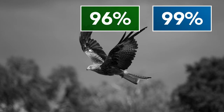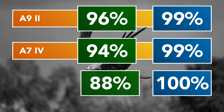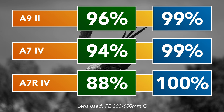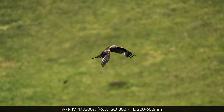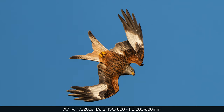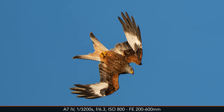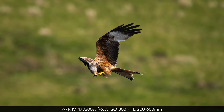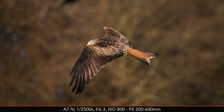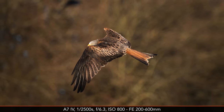Moving on to my birds in flight test, the a7 IV gave me an excellent result close to that of the a9 Mark II. The a7R IV is not too far behind but struggles a bit more when the subject is at a distance, where the number of slightly soft results increases. The tracking AF mode coupled with the expand flexible spot proved to be the best setting for both cameras. You can read more about my birds in flight tests on my website — the link is in the description.